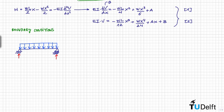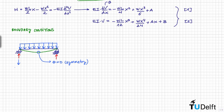The deformed shape of this beam is symmetric. From this symmetry, at the mid-span of the beam the slope is equal to zero. Additionally, at the support, at x equal to zero, the deflection is equal to zero. These are our two boundary conditions, which we will apply to solve for the constants of integration.